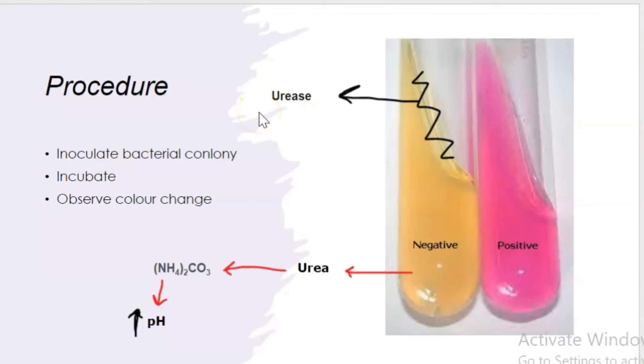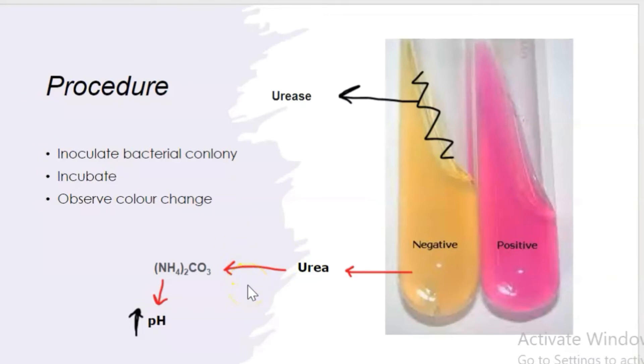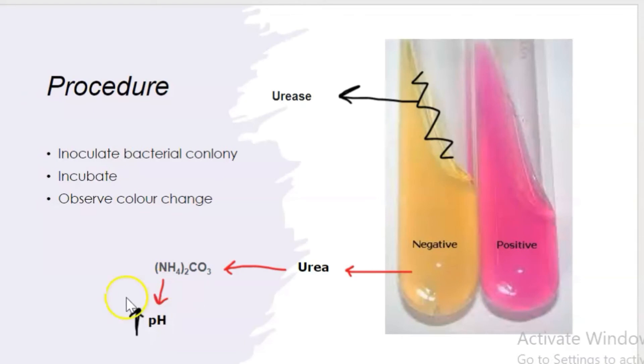If the bacteria have urease enzyme, it hydrolyzes urea to produce ammonia, water, and carbon dioxide. Then ammonia combines with carbon dioxide and water to produce ammonium carbonate. Ammonium carbonate is alkaline in nature, so it increases the pH of the medium and turns the medium bright pink.